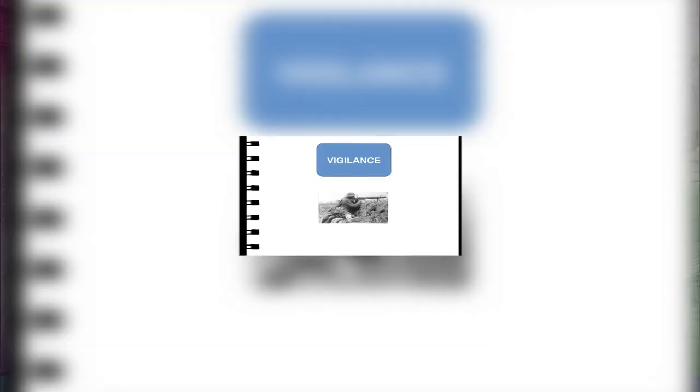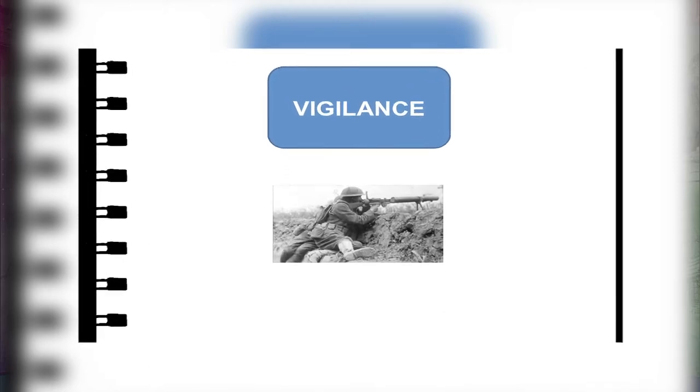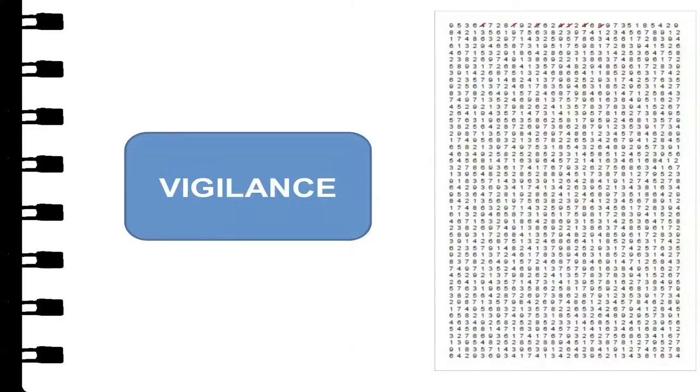Let's take up the fourth function of attention: the vigilance function. Have you ever seen how the soldier at the border is always vigilant about what is happening around him? Maintaining attention on a task continuously for some time — like looking at a radar screen — is called vigilance or sustained attention. It has been found that attending to a task for a long time is taxing, particularly if the task is monotonous, and it leads to a decrease in performance.